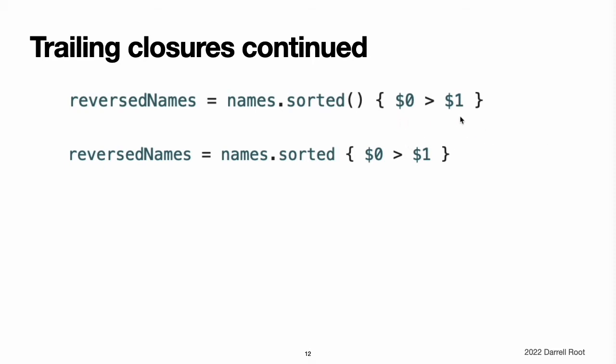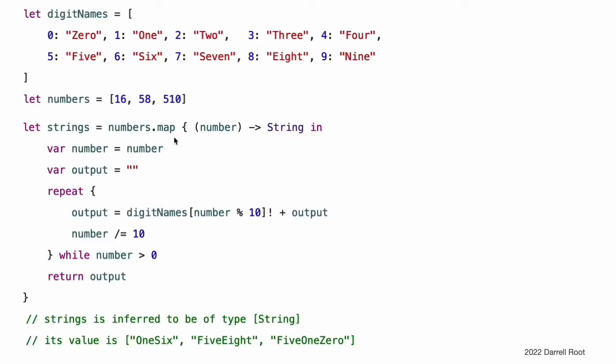The string sorting closure from the closure expression syntax section above can be written outside of the sorted-by method's parentheses as a trailing closure. If a closure expression is provided as the function's or method's only argument, and you need to provide that expression as a trailing closure, you do not need to write a pair of parentheses after the function or method's name when you call the function. Trailing closures are most useful when the closure is sufficiently long that it is not possible to write it inline on a single line. As an example, Swift's array type has a map method which takes a closure expression as its single argument. The closure is called once for each item in the array and returns an alternative mapped value, possibly of some other type, for that item. You specify the nature of the mapping and the type of the return value by writing code in the closure that you pass to map.